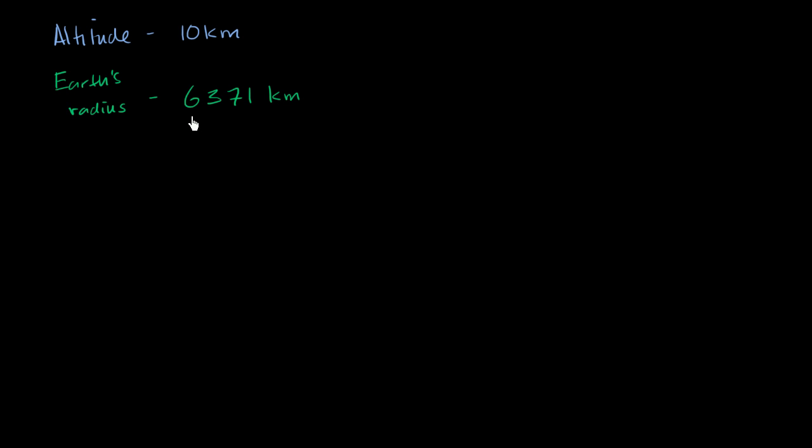And it's actually not constant throughout the Earth, but we're going to assume that for the sake of this problem that Earth is a perfect sphere. It actually is not one, but we will assume that it's a perfect sphere and its radius is roughly 6,371 kilometers.